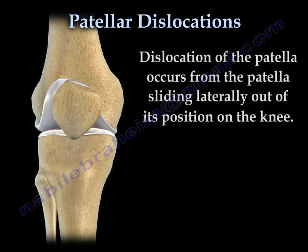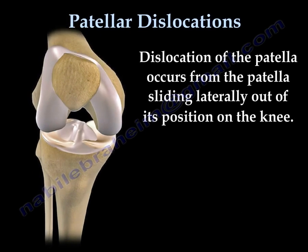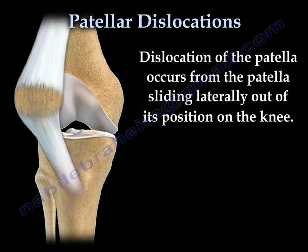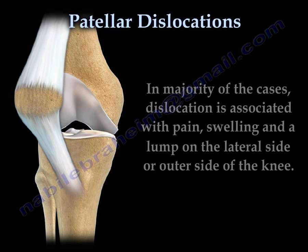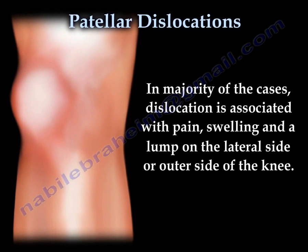Dislocation of the patella occurs from the patella sliding laterally out of its position on the knee. It may occur from a blow to the knee, acute trauma, or severe twisting of the knee. In the majority of cases, dislocation is associated with pain, swelling, and a lump on the lateral side, or the outer side, of the knee.